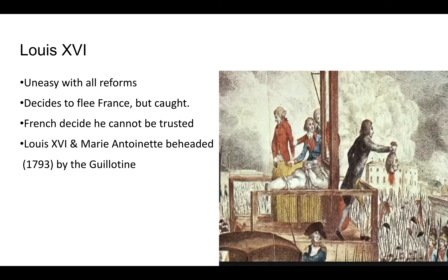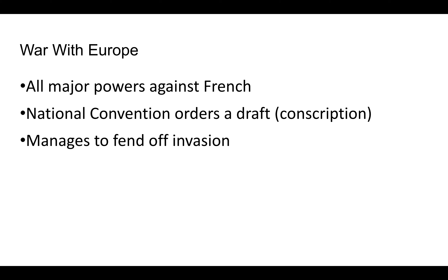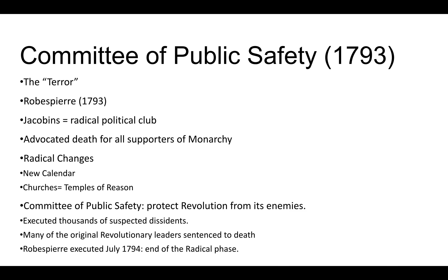The rest of Europe — especially Austria and Prussia — sees this as a nerve-wracking situation, because if it happened there it can happen anywhere. Now all the major powers are against France and attacking them. The National Convention orders a draft, conscripting men into the army. With this conscription they manage to defend off the invasion and keep their sovereignty. In 1793 we enter the most radical, most extreme phase of the revolution.